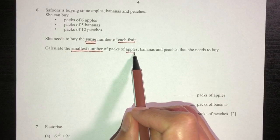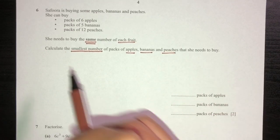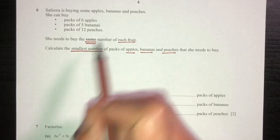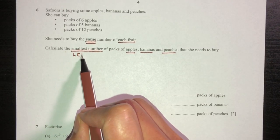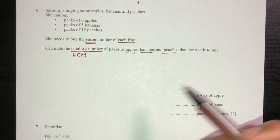When you see the same number and the smallest number, it means we have to find the lowest common multiple. Now how do you find the LCM?